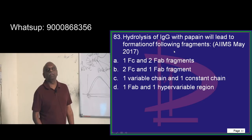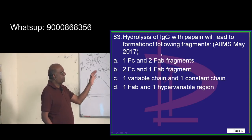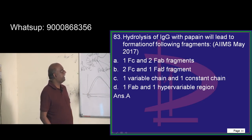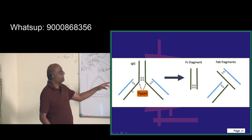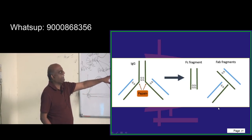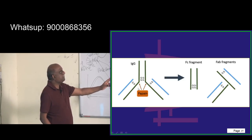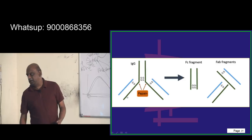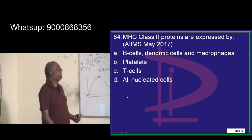Hydrolysis of immunoglobulin G with pepsin — what does it lead to? It leads to the formation of one Fc fragment and two Fab fragments when you use pepsin to cut immunoglobulin G. That is what you need to basically remember.